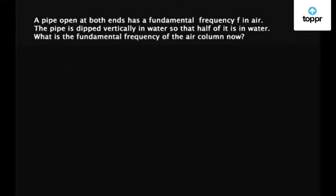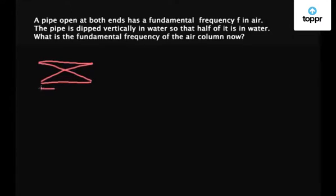When the pipe is open at both ends, the fraction of wavelength inside the pipe will be something like this — both ends are open. Let L be the length of the organ pipe. The fraction of wavelength inside this air column is lambda by 2, which is equal to L. So we have lambda equal to 2L.